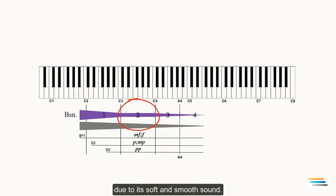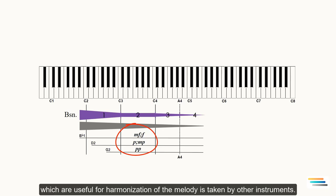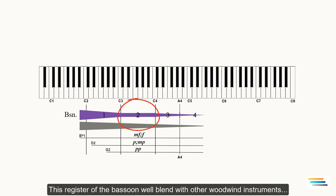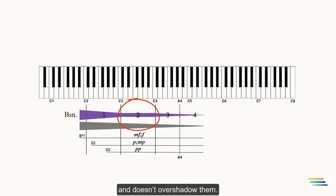In general, the second register is more suitable and useful than the other registers due to the soft and smooth sound. The player can achieve through pianissimo, piano, mezzo piano, mezzo forte, forte dynamics, which are useful for harmonization of the melody taken by other instruments. This register of the bassoon blends well with other woodwind instruments and doesn't overshadow them. But it doesn't mean that you shouldn't use other registers in chord voicing.